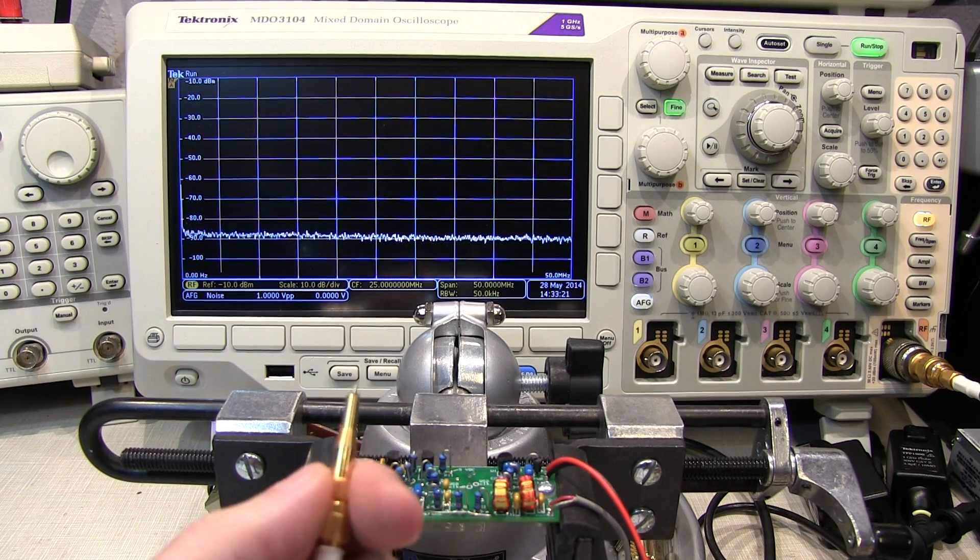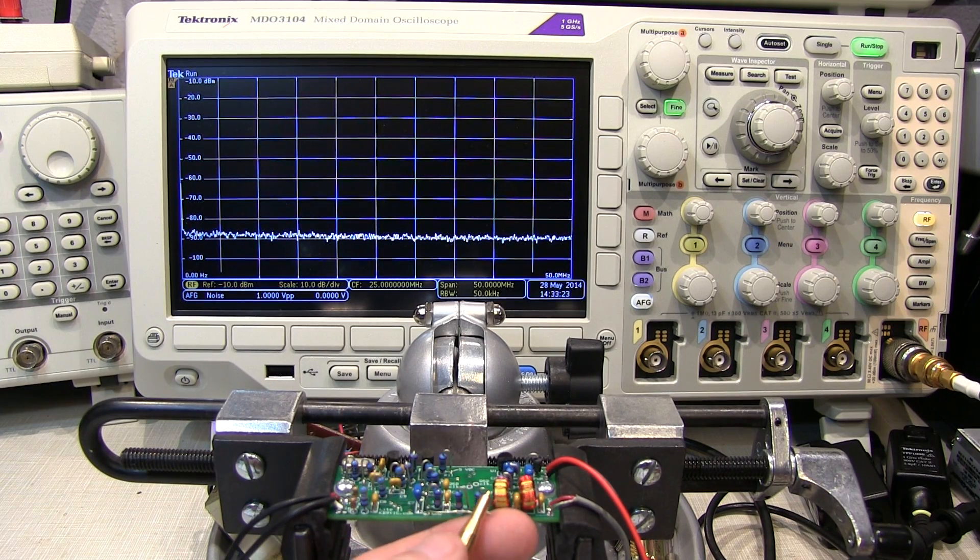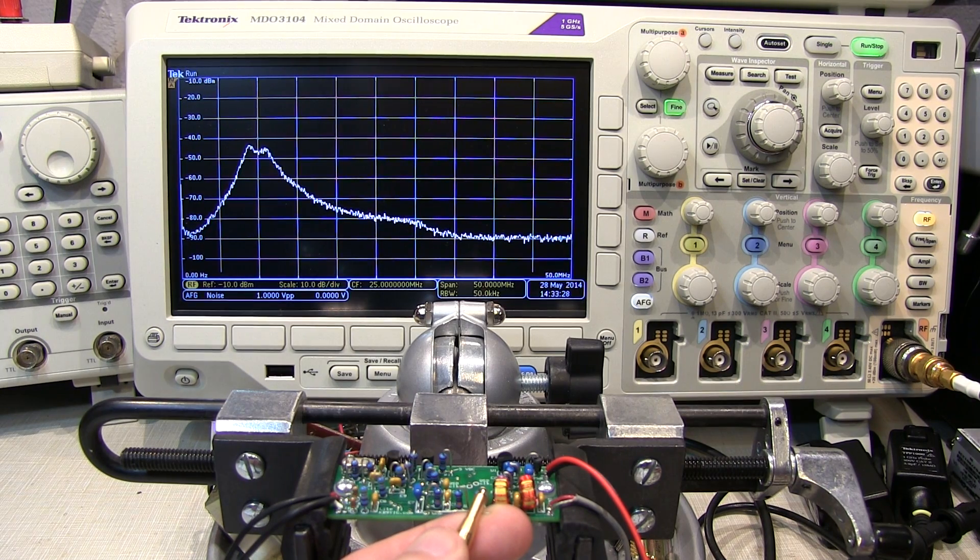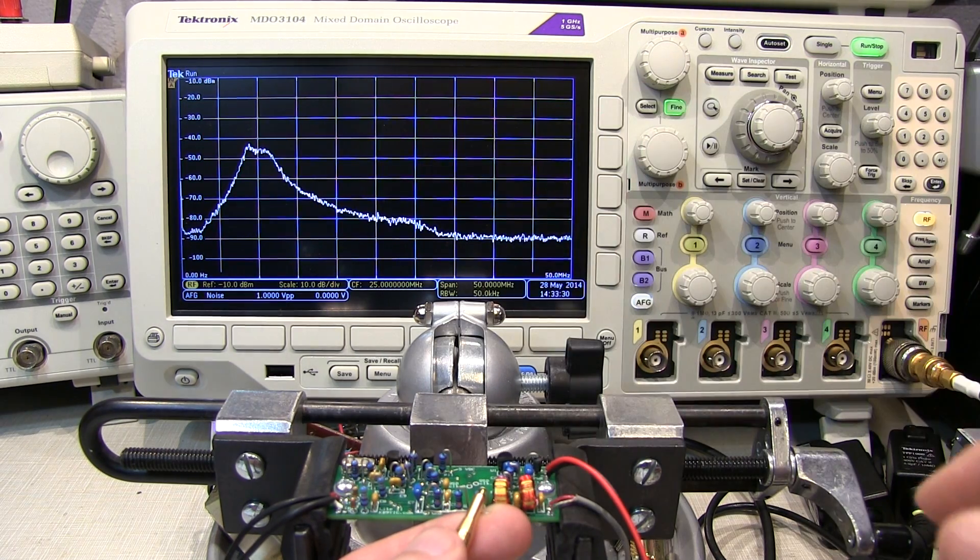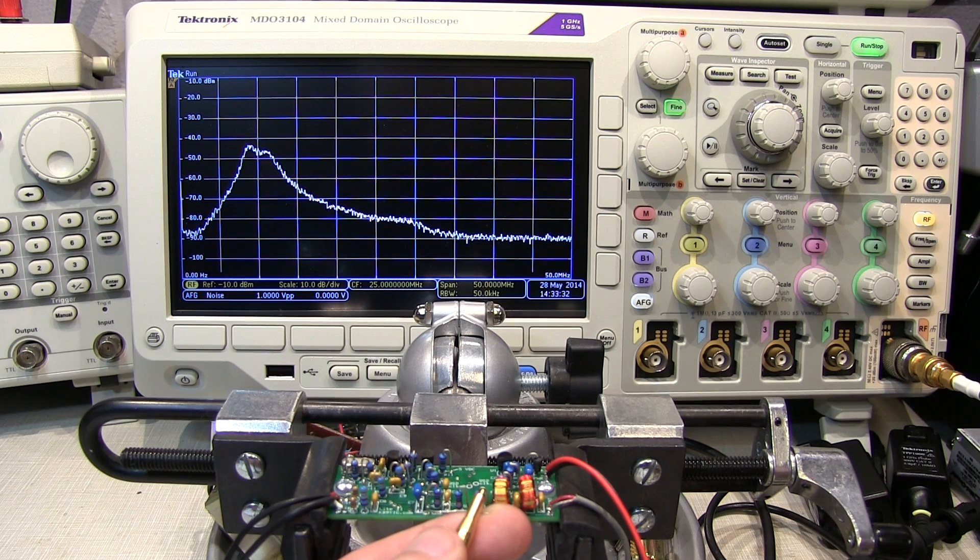To probe the output of the filter, we'll just hold the ground lead against the ground of the probe and touch the probe to the output of the filter. And now we can very quickly, in one picture, see the shape of that bandpass filter.